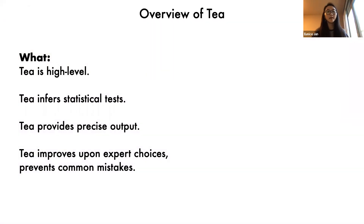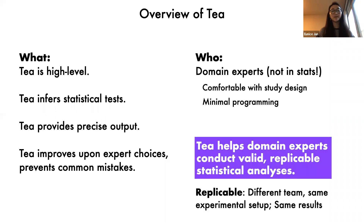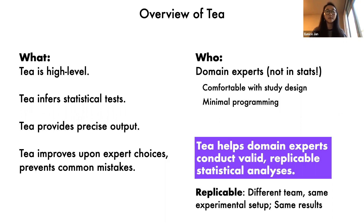TEA is a high-level language. It infers and executes valid statistical tests based on the user's study designs, hypotheses, and data properties, and provides precise output that contextualizes the statistical results to specific study designs. In our initial evaluation, we found that TEA replicates and even improves upon expert choices and prevents common mistakes. TEA is designed for domain experts who aren't statisticians — most of us here who are computer science researchers or students — and other empiricists who are comfortable with study design and minimal programming. TEA helps such domain experts conduct valid, replicable statistical analyses.